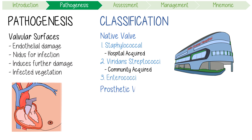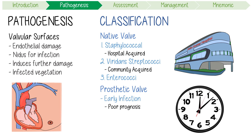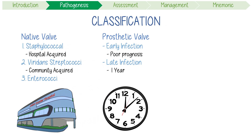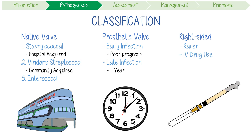Then we have prosthetic valve endocarditis, which is divided into early infection, which has a poor prognosis, and late infection, defined as one year post-implantation. Finally, right-sided endocarditis is considered special because it's rarer and highly associated with IV drug use and Staphylococcus aureus.